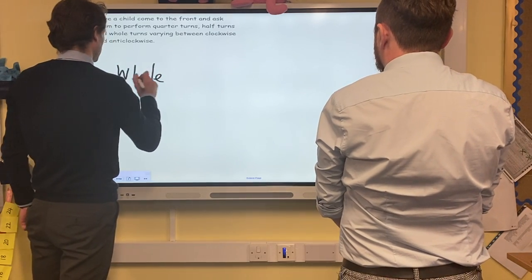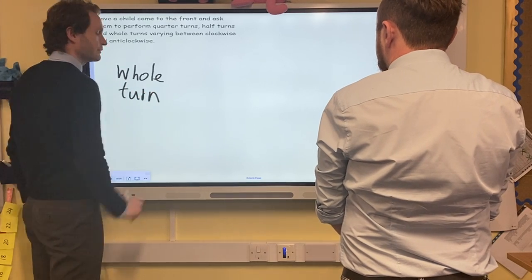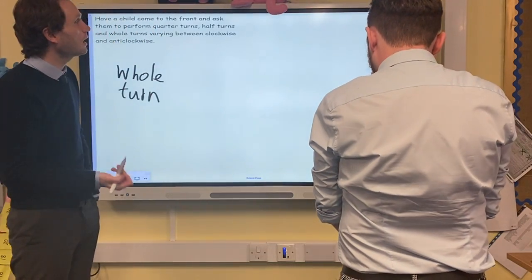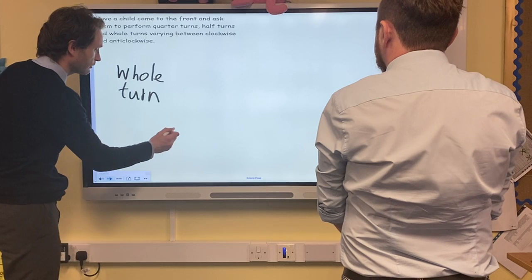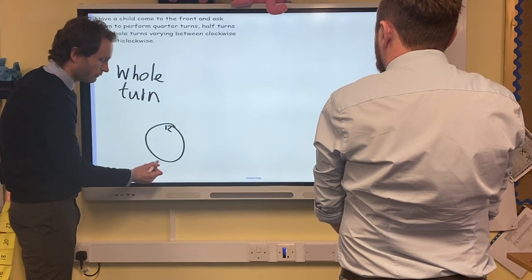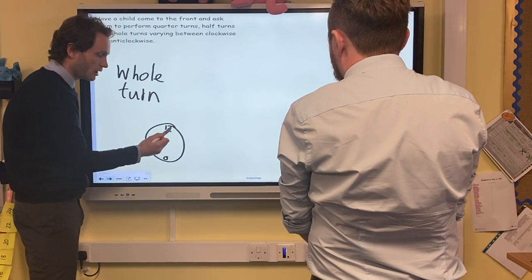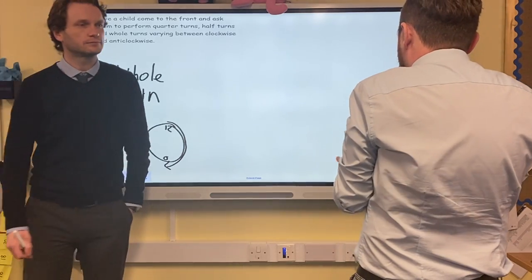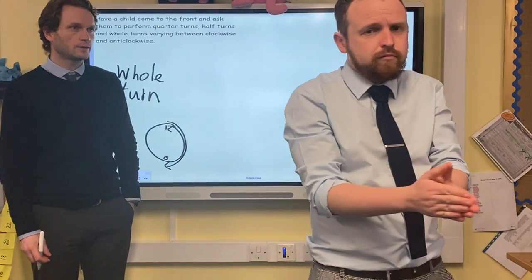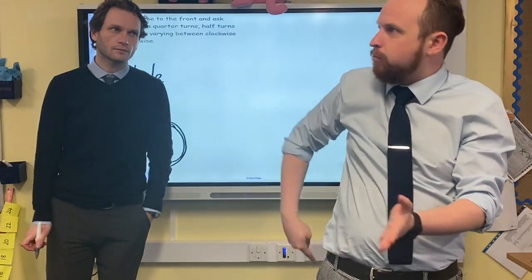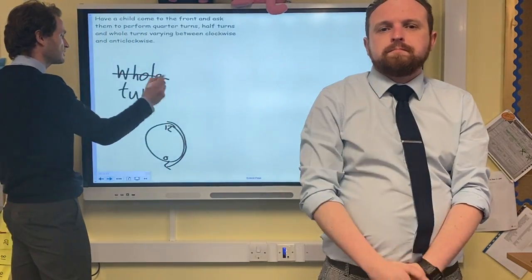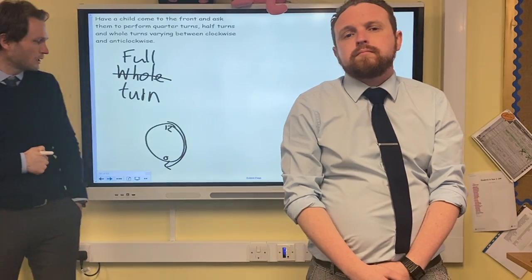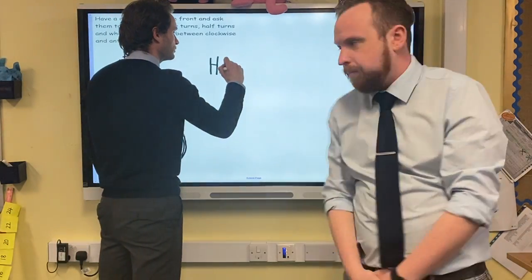Now, thinking back to our work on fractions, Mr. Lake, I'd like you to do a half turn. Remember half past is when the hand gets to the six, so go from there all the way around to the six and stop halfway around. That's half of a full turn. Let's call it a full turn. We've done a half turn — go back to your starting position.